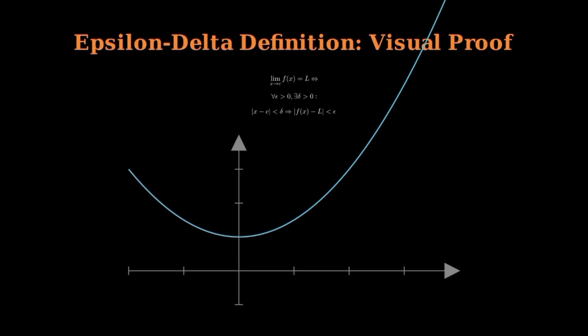Watch as we demonstrate this with a simple example. Consider the function f of x equals x squared over 2 plus 1, and let's examine continuity at x equals 1. First, we choose epsilon equals 0.8.